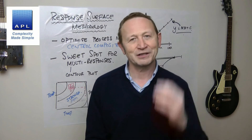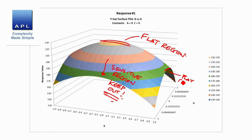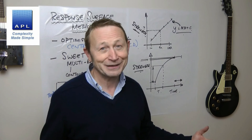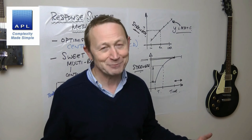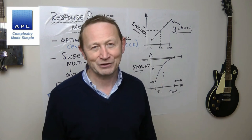If you use response surfaces to find regions of robustness like this, your tolerances will be wider, you'll please the customer in a much cheaper and easier-to-achieve way, and basically you'll make more money. Response surface methodology.